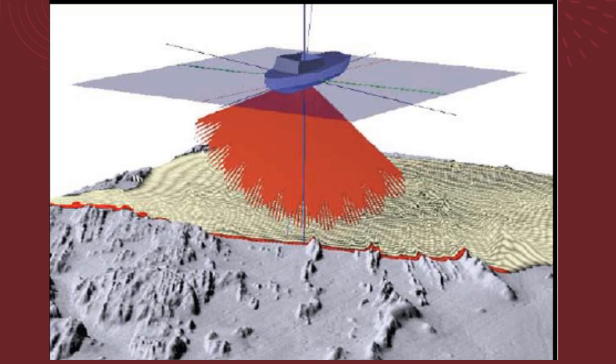Multi-beam echo sounders can typically achieve coverage in one pass up to around eight times the water depth. So in 100 meters of water, the ship can survey up to an 800 meter wide strip in one pass. In contrast, a ship using a single beam system would require anywhere between four and eight passes for the same area.